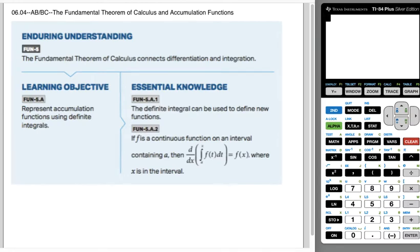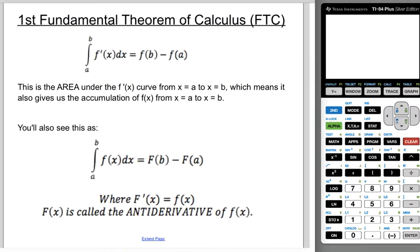This is AB and BC Calculus. We're doing Unit 6, Section 4, which is the Fundamental Theorem of Calculus and Accumulation Functions. Let's go ahead and jump in. Let's talk about the first Fundamental Theorem of Calculus, the FTC.